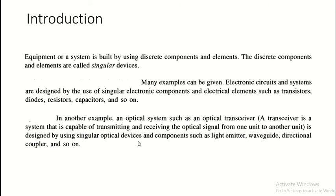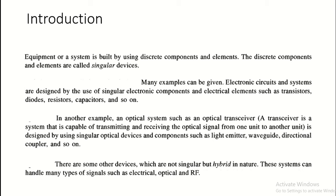Another example is an optical system such as an optical transceiver. A transceiver is a system capable of transmitting and receiving optical signals from one unit to another, and it is designed using various basic optical devices and components such as a light emitter, waveguide, directional coupler, and so on. We can also discuss the optical-based tachometer, which works upon such basic singular optical devices.